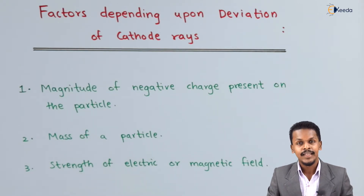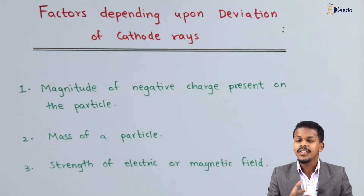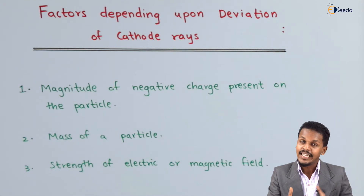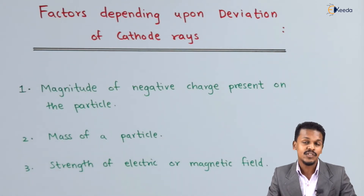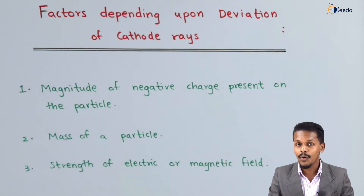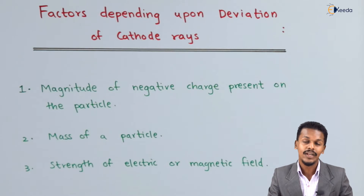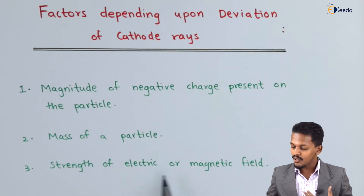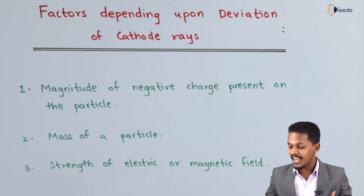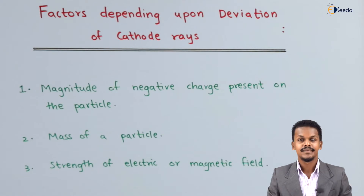Now the second factor is the mass of the particle. Lower the mass of the particle, more will be the deviation. The third factor is the strength of the electric and magnetic field.